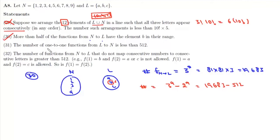Now 31 is: number of 1-to-1 functions from L to N is less than 512. Now here we are defining functions from L to N. So we have A, B, C and N we have 9 elements from 1 to 9.